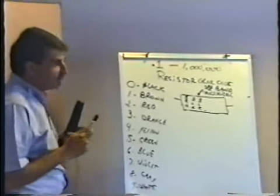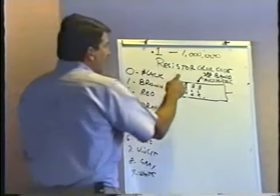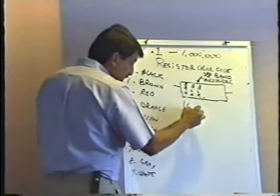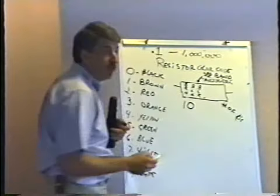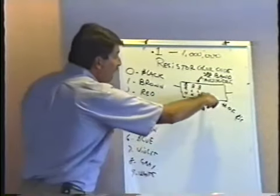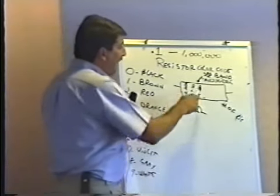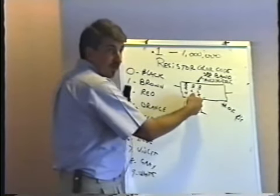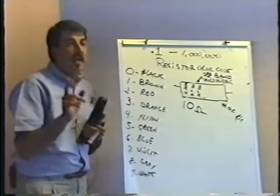10 ohms is correct — let's see why. Brown is one, black is zero, and the third band — black — tells you the number of zeros to put after the first two: none. No zeros. It's a 10-ohm resistor. If that third band is black, it's saying don't put any zeros there at all. You do write down that second digit — that's a significant digit — but the multiplier says put no zeros after it.